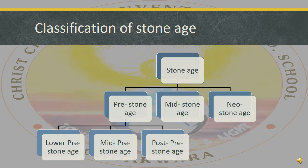Pre-Stone Age is further classified into three types: Lower Pre-Stone Age, Mid-Pre-Stone Age, and Post-Pre-Stone Age.